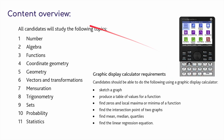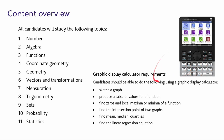So what are the differences? All students will sit these 11 topics: Number, Algebra, Functions, Coordinate Geometry, Geometry, Vectors and Transformations, Mensuration, Trigonometry, Sets, Probability, and Statistics. All students will also be expected to have a graphic display calculator, such as the HP Prime.